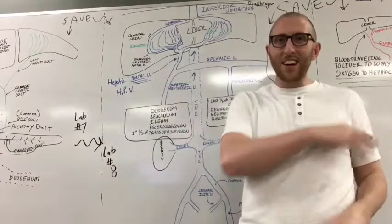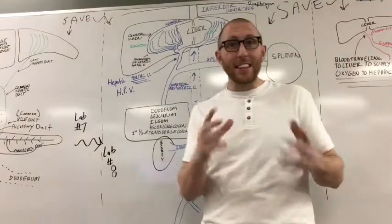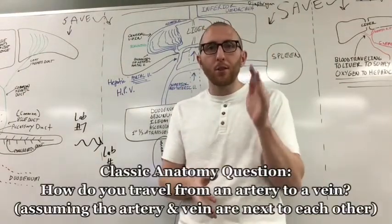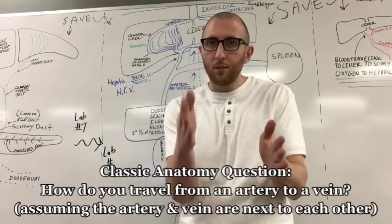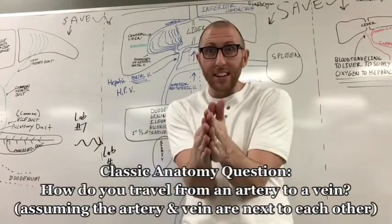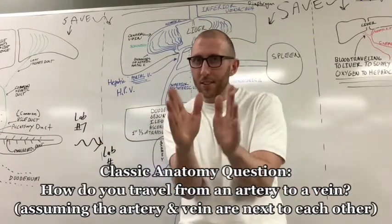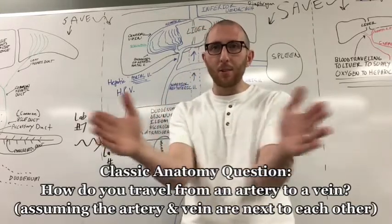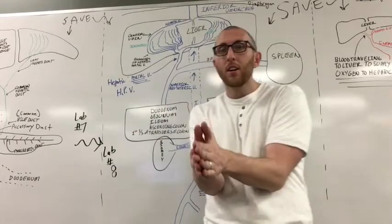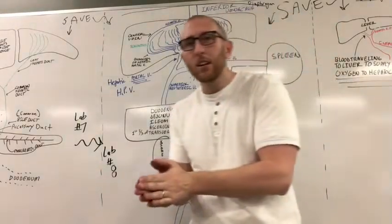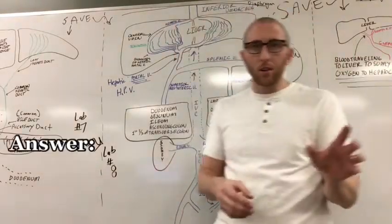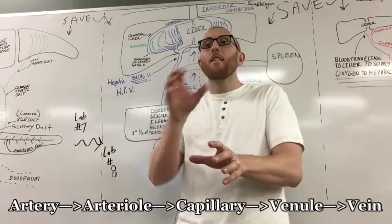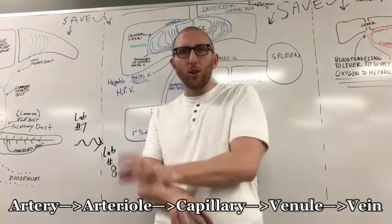Now a common classic, super classic anatomy question that you gotta answer is how do you get from an artery to a vein if they're right next to each other? Take a minute, think about that. How do you get from an artery to a vein if they're right next to each other? The answer is you go artery, arteriole, capillary, venule, then the corresponding vein.